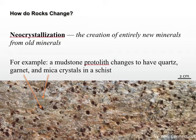One type of metamorphism is called neocrystallization. Neo means new, so in neocrystallization, we're going to start with one set of minerals and then convert them to an entirely different type of mineral through different temperature and pressure regimes. In this photograph, you see a schist, which is a medium to high grade metamorphic rock. The protolith was a mudstone, but you don't see any mud anymore. Now we see the little purple soccer balls, which are our garnets, and this sample is very shiny because of the presence of micas — our biotites and muscovites.